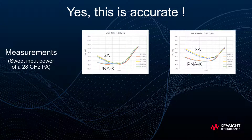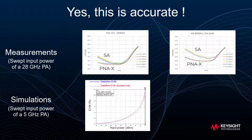What about the accuracy? This methodology has been validated on our instruments, comparing the time domain techniques of the VSA with the frequency domain techniques of the PNAX. The curves represent the EVM over power and frequency sweeps with two different modulation schemes fed into a 28 GHz power amplifier. The curves match well when the power amplifier is in nonlinear condition, and distortion EVM shows even less residuals at lower input powers. On the simulation side, distortion EVM has been checked versus the dataflow EVM that SystemVue can compute through virtual test benches, showing a comparison of swept input power EVM for a 5 GHz power amplifier. These results correlate extremely well.